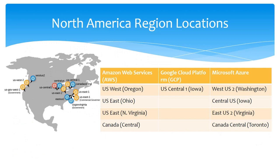Let's start with North America regions. We have categorized North America regions based on the cloud platform supported. The first category is AWS, that is Amazon Web Services. For the North America region, AWS supports US West which is in Oregon, US East in Ohio, US East in North Virginia, and Canada Central.